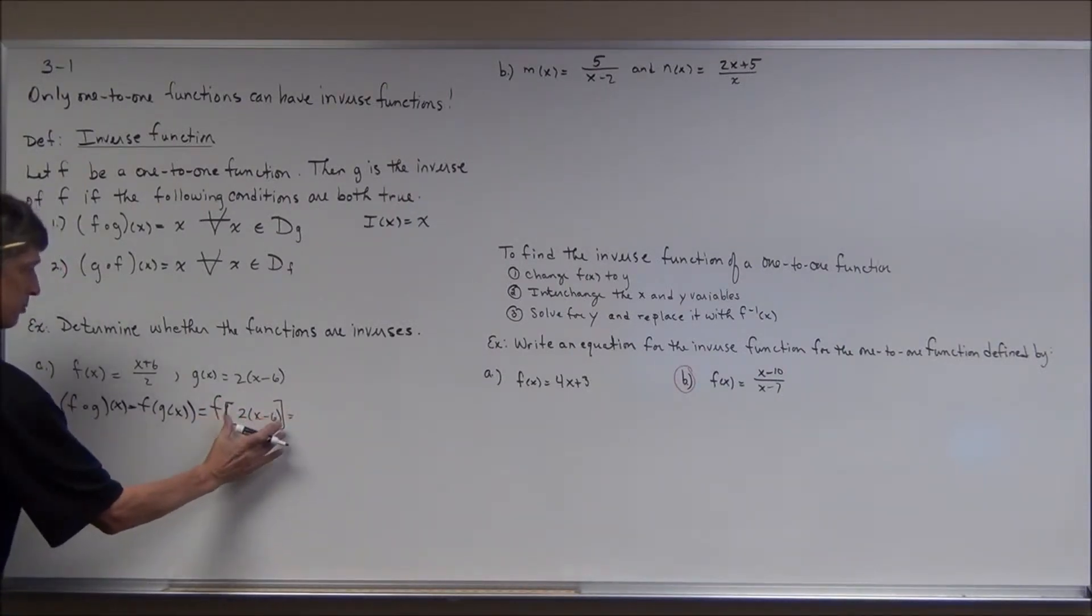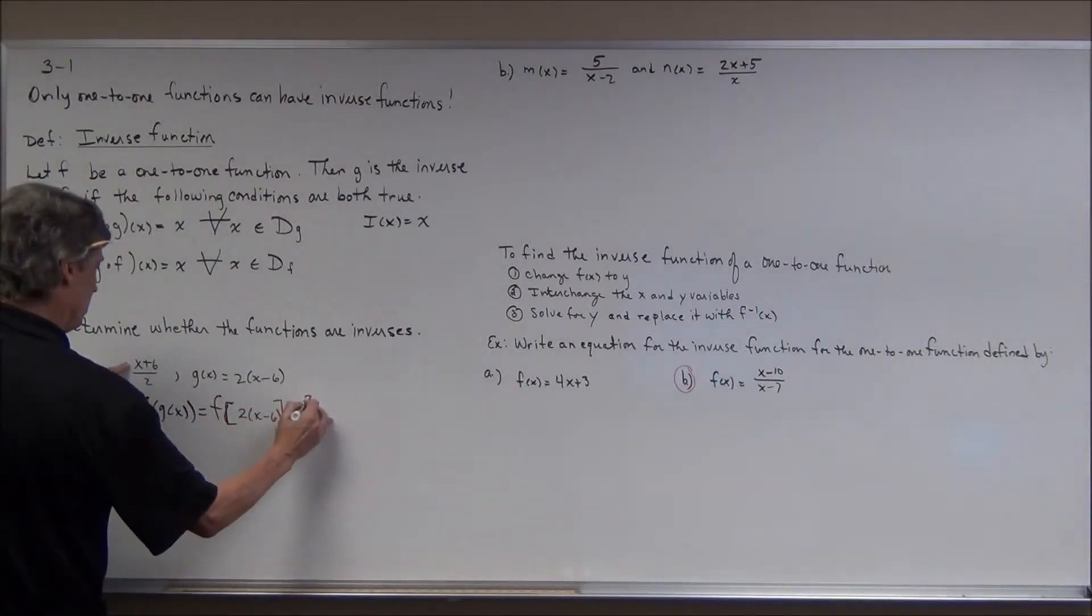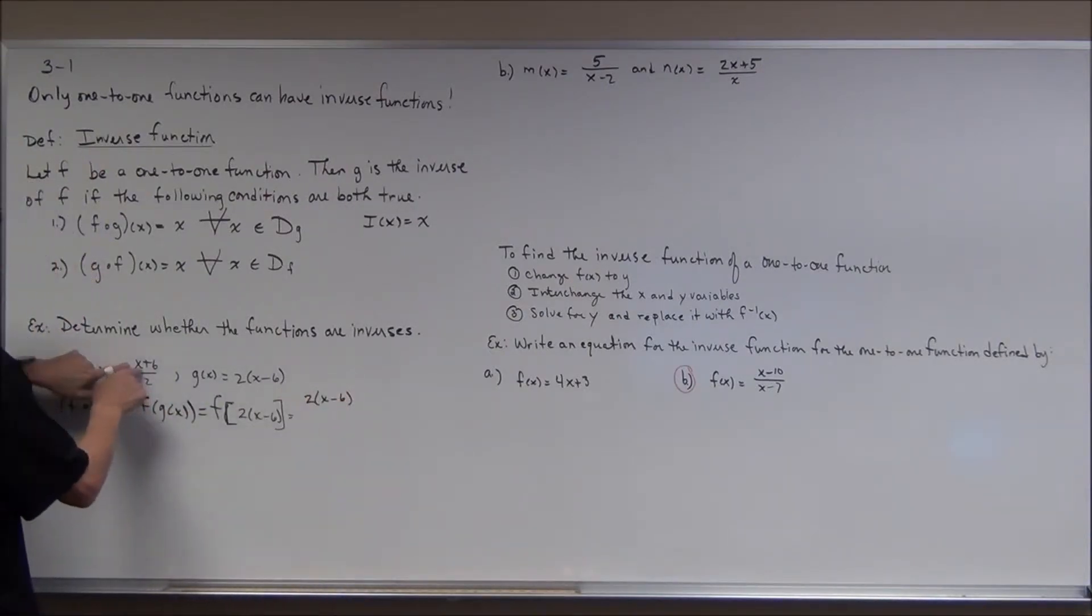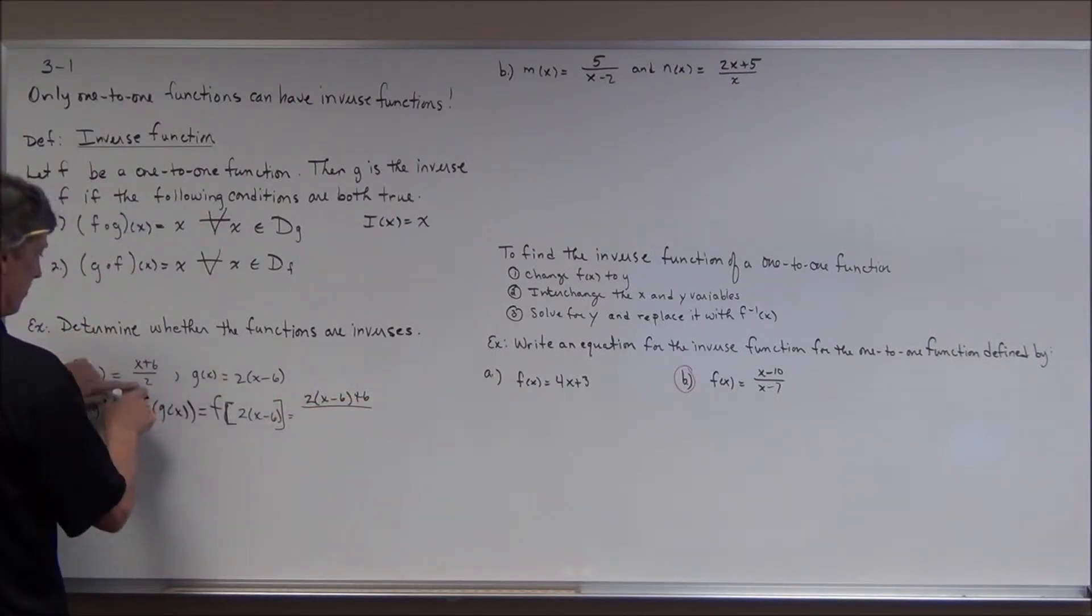And that means I'm going to substitute all of this in the rule for f. So it all goes in right there. So I have two times the quantity x minus six. That's x. Plus six. All divided by two.